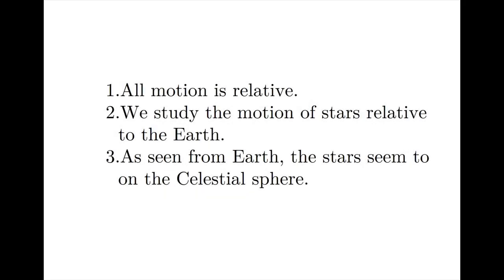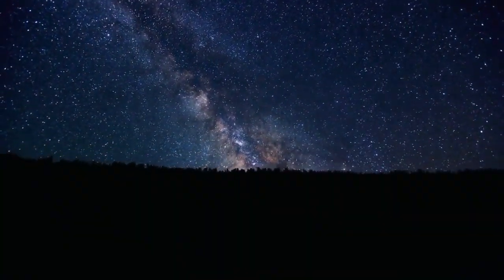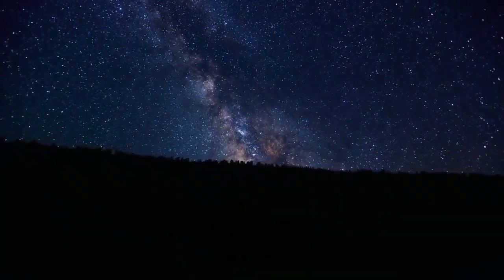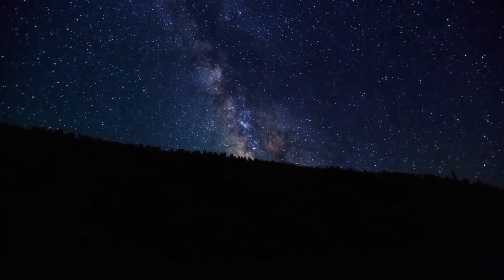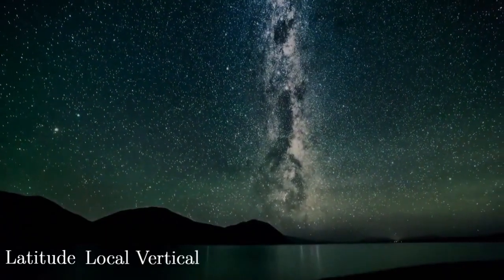The key takeaways from the last video were: first, all motion is relative. Second, we study the motion of stars relative to the earth. Third, as seen from the earth, the stars seem to move in a hemispherical dome which is half of the celestial sphere. With these ideas firmly understood, we are now ready to deal with the dance of the stars. Before we start talking of star motion, we need to review the basic ideas of latitudes, local vertical and local horizon.